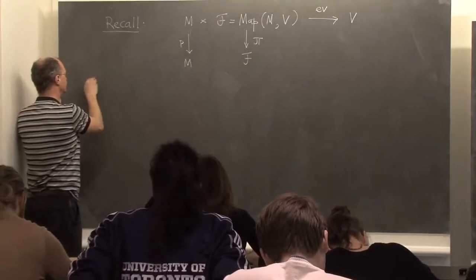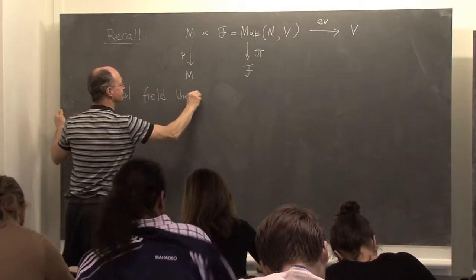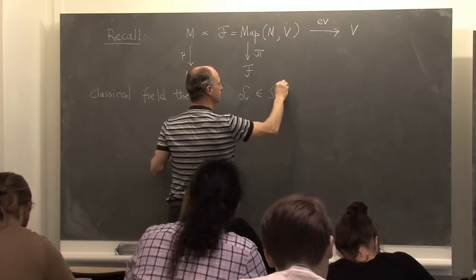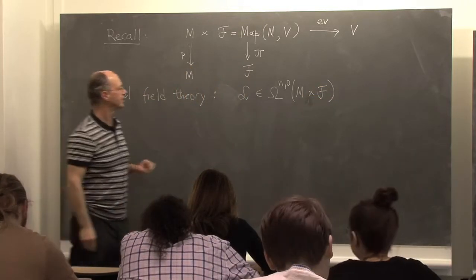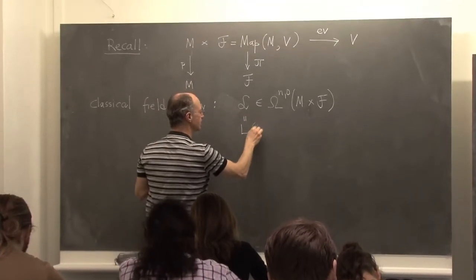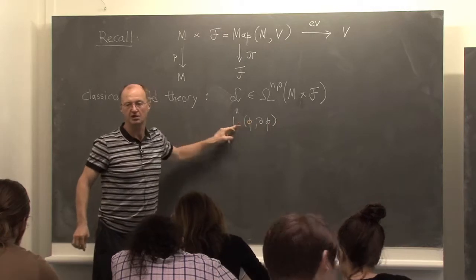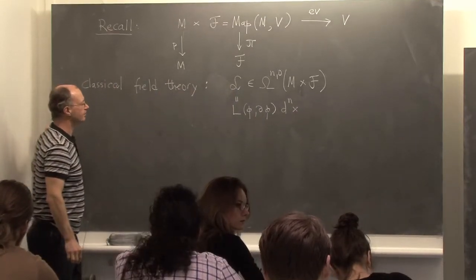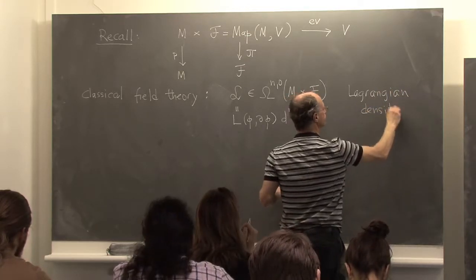The following objects define a classical field theory. First, we have the Lagrangian density L, which is an n-form on M and a zero-form on F. We can also write it as a polynomial which depends on the variables phi and derivatives of phi, viewed as formal variables, times d^n x.